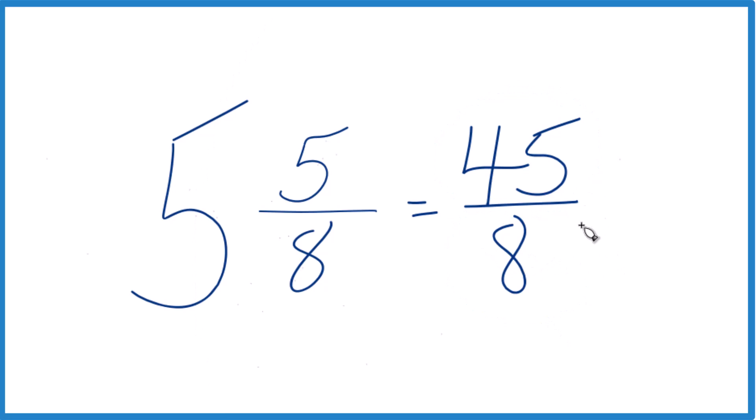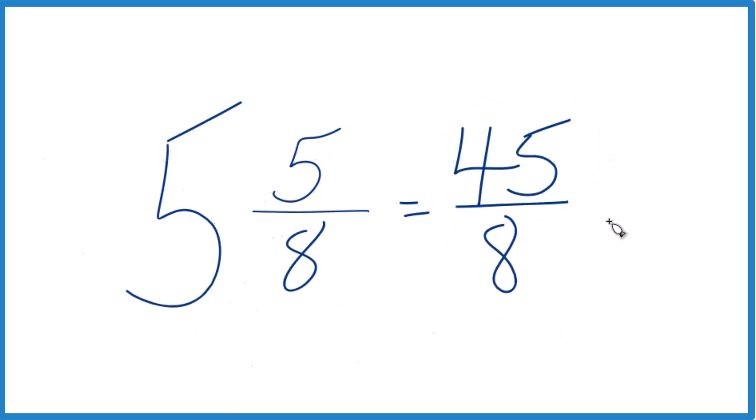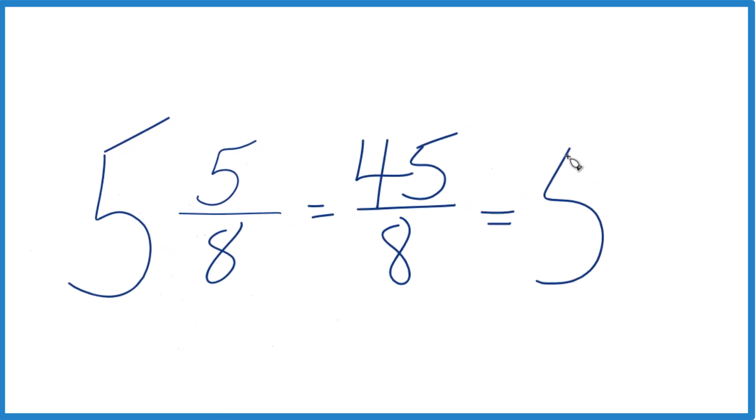And you can even check your work, because 8 goes into 45. 5 times 8 would be 40, and then we'd have 5 left over. Bring the 8 across, we get 5 and 5 eighths. That's the mixed number we started out with. So we know we did it right.